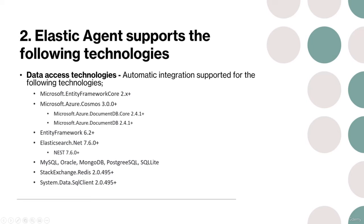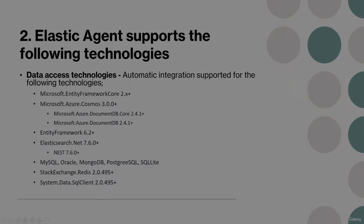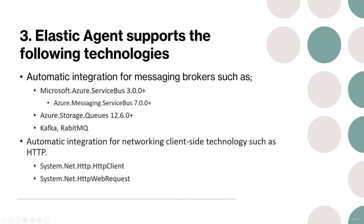Elasticsearch .NET 7.6.0 and newer is supported for both the regular .NET Framework (7.6.0 and newer). Elastic Agent also supports MySQL, Oracle, MongoDB, PostgreSQL, SQLite, and StackExchange.Redis starting from version 2.0.495 and newer versions.